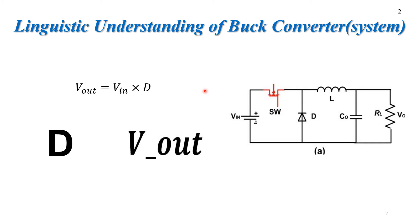So let's look at the buck converter — here the control signal is provided to the switch, which controls the output. Basically, the buck converter is used to maintain a constant output voltage which is less than the input voltage.